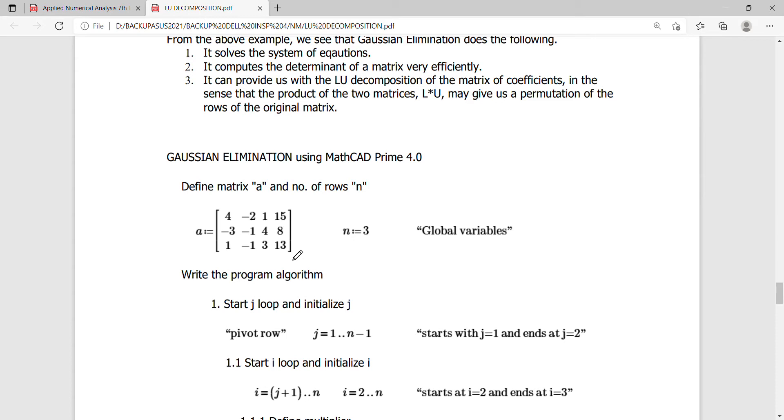The given global variables are the matrix A, which is the augmented matrix, and the number of rows is defined by the number of unknowns and the number of equations. The global variables are those which are defined outside a program loop and they are applicable throughout the premise of the worksheet of the MathCAD environment.